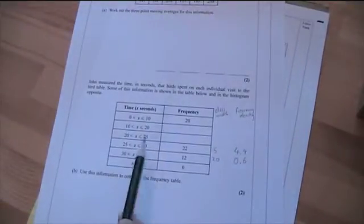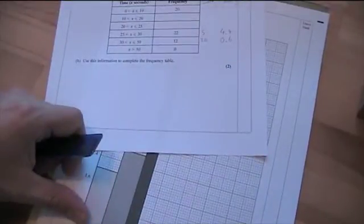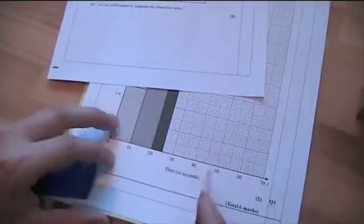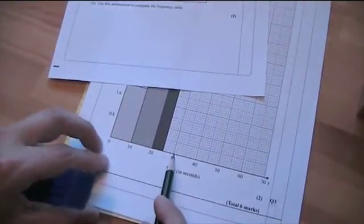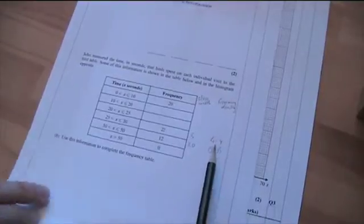First off, I'm going to do this column here between 25 and 30. It's between 25 which is here and 30 which is here. And the height is the frequency density, which is 4.4.